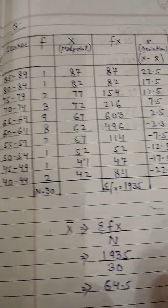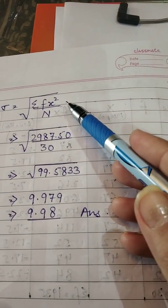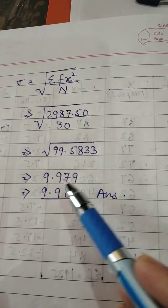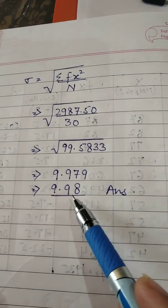Divided by n. N is 30. Toh dekhi aapka yeh aagya hai. Sigma fx square upon n. Aapne calculate kar diya. And you got the answer as 9.98.